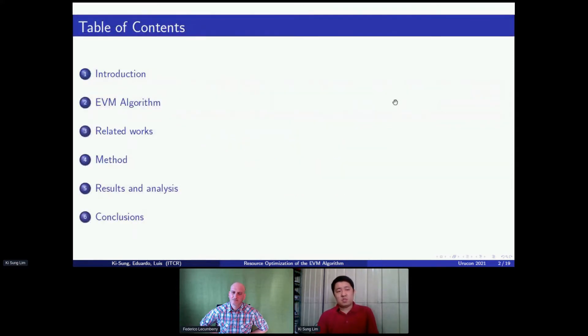Starting with the presentation, let's take a look at the presentation's agenda. First, we're going to have a brief introduction. Next, we're going to explain a little bit about the Euler video magnification algorithm. Later, we're going to talk about some related previous works with our project. Next, we're going to have the method that we applied to obtain our results. Then we're going to show our results and analyze them. And finally, we have our conclusions.